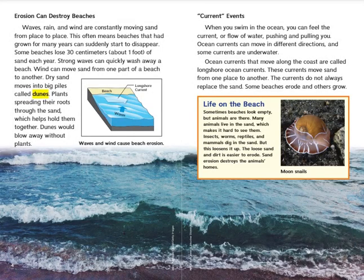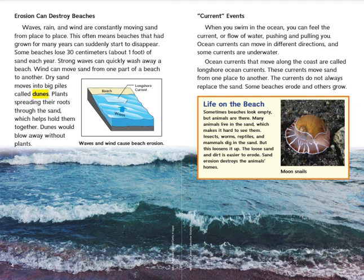Erosion can destroy beaches. Waves, rain, and wind are constantly moving sand from place to place. This often means beaches that had grown for many years can suddenly start to disappear. Some beaches lose 30 centimeters, about one foot, of sand each year. Strong waves can quickly wash away a beach. Wind can move sand from one part of a beach to another. Dry sand moves into big piles called dunes. Plants spread their roots through the sand, which helps hold them together. Dunes would blow away without plants. Waves and wind cause beach erosion.